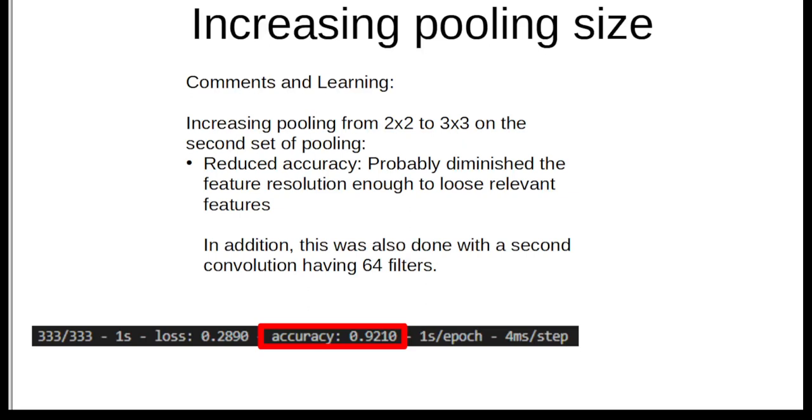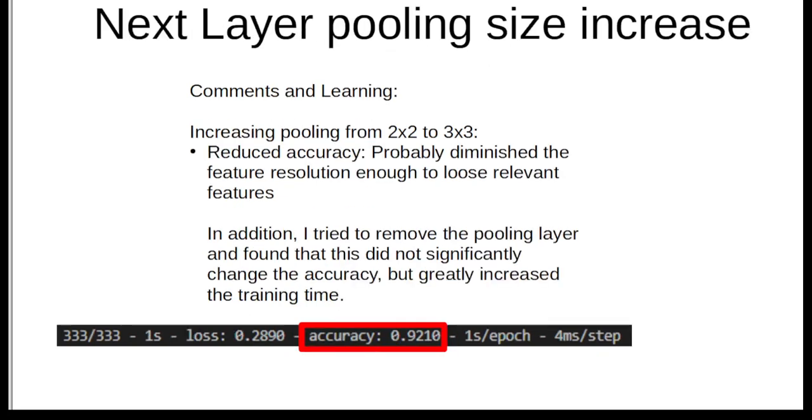I also did the same thing with the second pooling after the second convolutional filters, and increased that from a 2x2 matrix to a 3x3 matrix. It had relatively the same effect. The accuracy also dropped to about 92%.